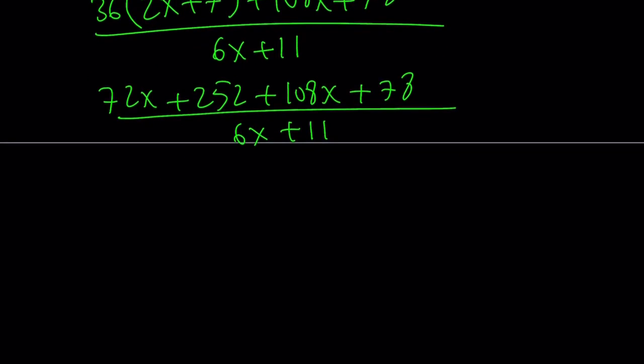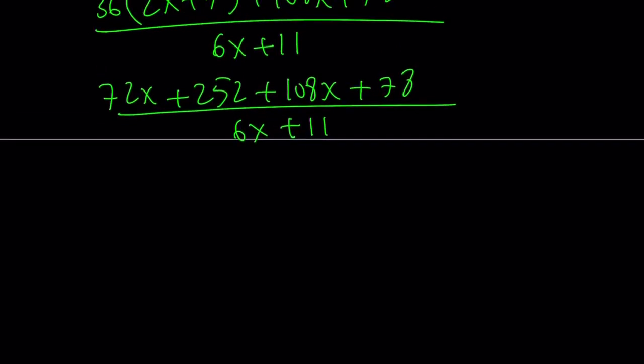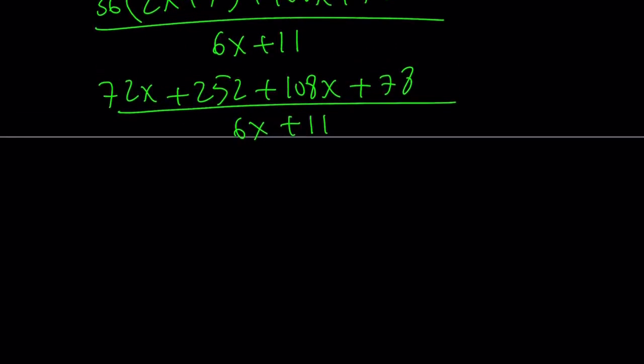And then, if you hear anything like a running sound, that's my cat. You get 180x + 330 divided by 6x + 11. She just wants to be crazy at nighttime.